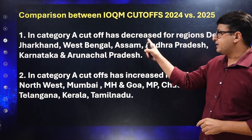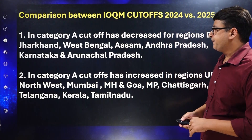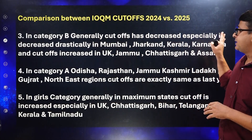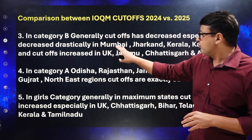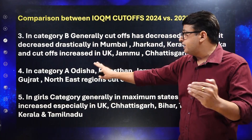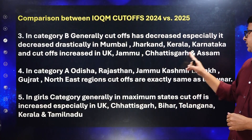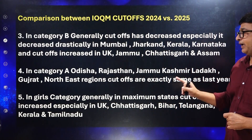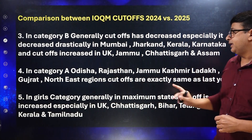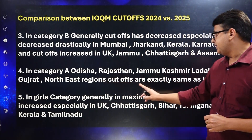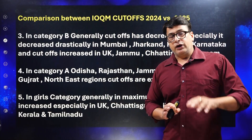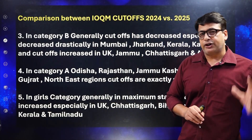In Category B, the cutoff generally decreased, especially drastically in Mumbai, Jharkhand, Kerala, and Karnataka. It increased in Uttarakhand, Jammu, Chhattisgarh, and Assam. In Category A, the cutoff remained exactly the same as last year in: Odisha, Rajasthan, Jammu, Kashmir, Ladakh, Gujarat, and the Northeast region. Our predicted cutoff from the last session matched almost every state.